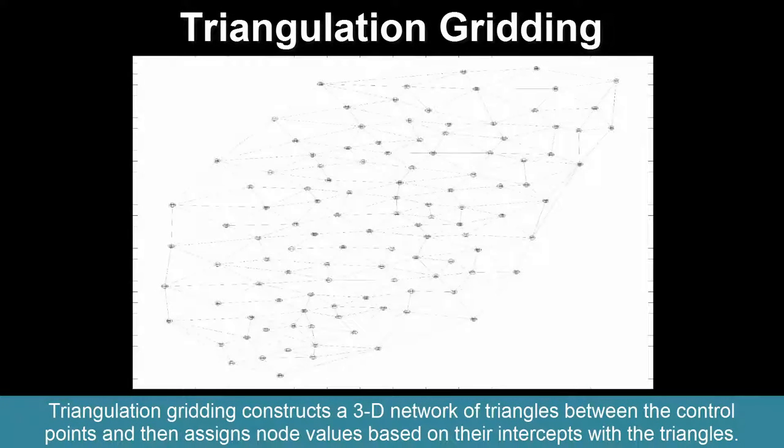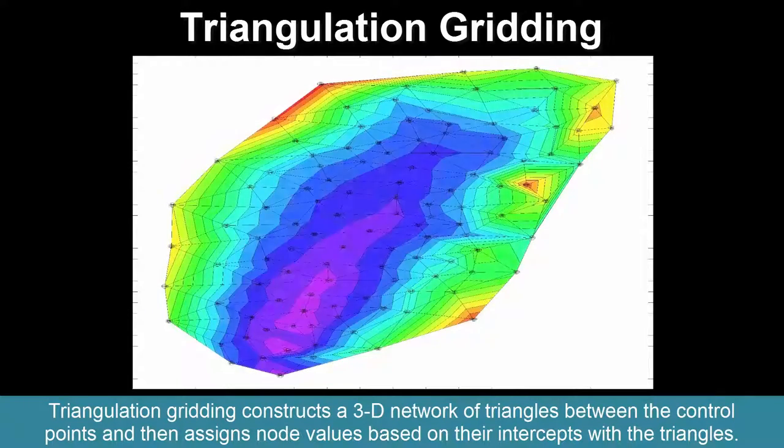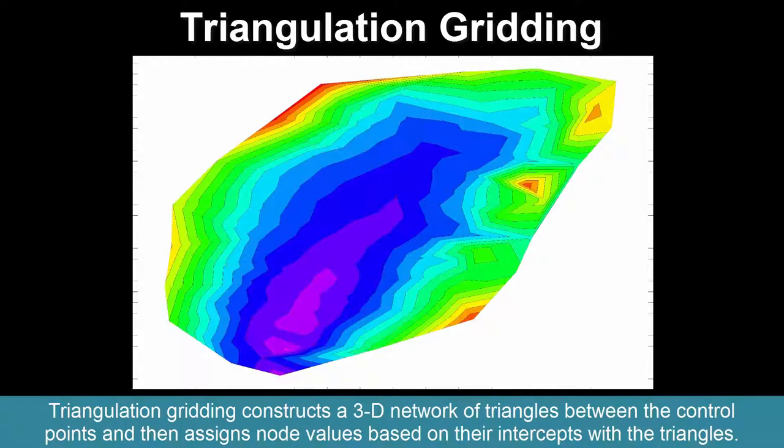Triangulation gridding constructs a three-dimensional network of triangles between the control points and then assigns node values based on their intercepts with the triangles.